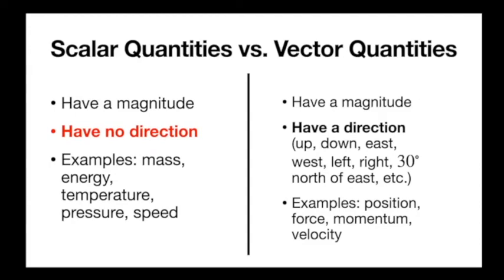You probably saw this in DL already, but we have scalar quantities, which we've talked about exclusively so far this quarter. They're quantities that have a magnitude but no direction, like mass, energy, temperature — just 3 kilograms, 4 joules, 2 degrees Celsius, whatever. It doesn't make sense to assign a direction for those things. We just have an amount and a unit.